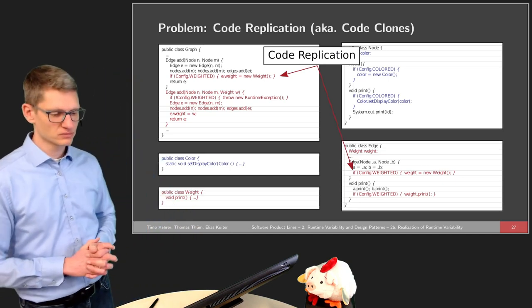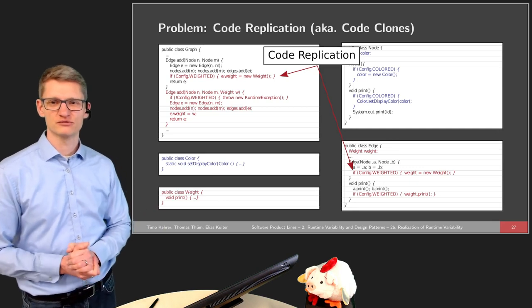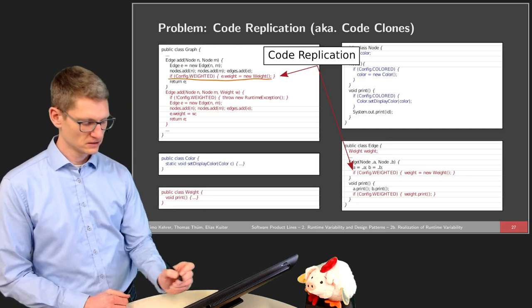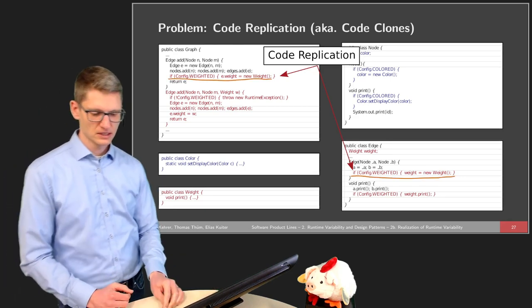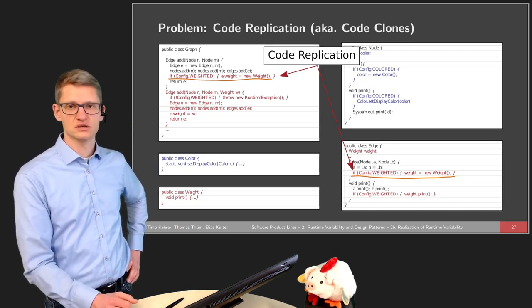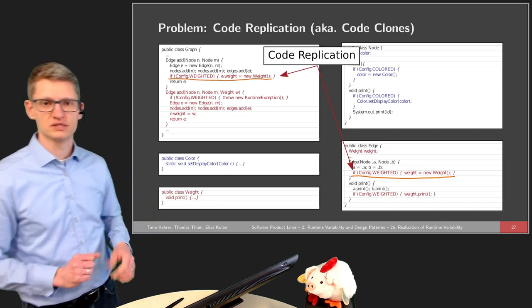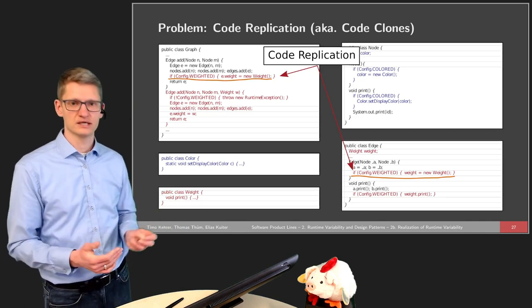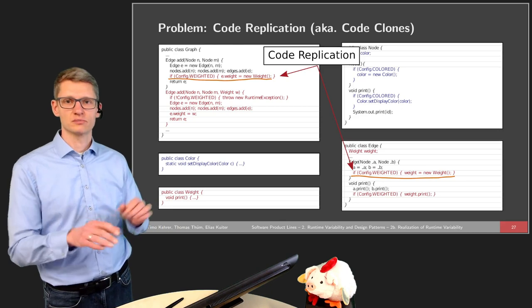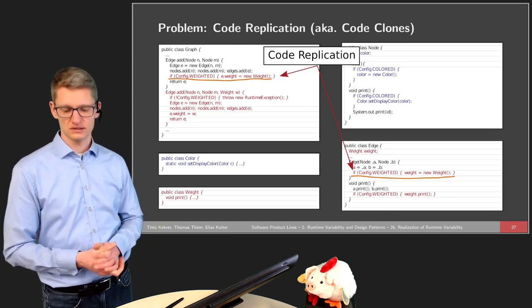The third problem is code replication. In this example, there are two statements that are completely identical — initializations of the weight in different places in the implementation. This is considered code replication, also known as code clones. Code replication does not only mean identical copies but also very similar copies and replicates of the source code. Some of the later implementation techniques discussed in this course will try to avoid code replication, and we will talk about these problems with code clones in more detail in the third lecture.